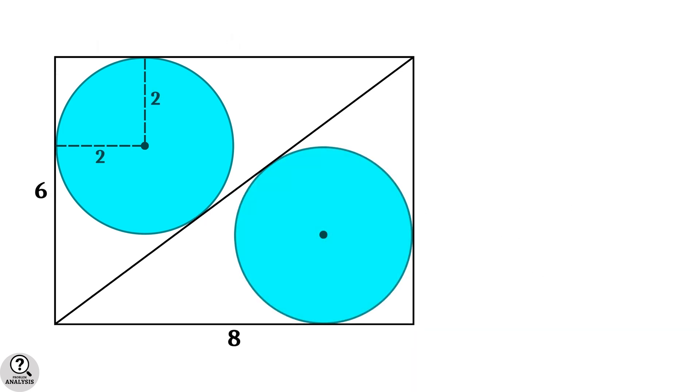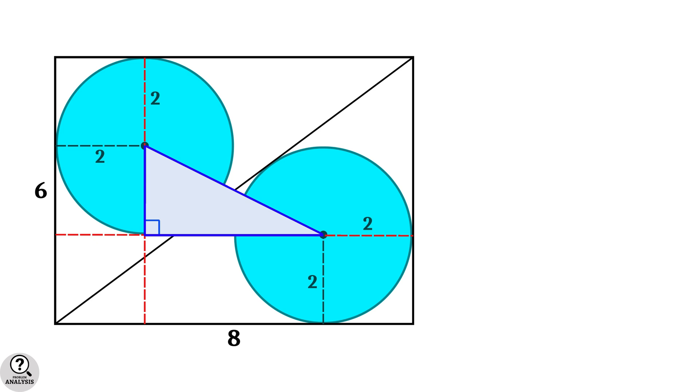Now consider the whole rectangle. Since the circles are identical, both have radius 2 units. Remember, we want to find the length of the blue line. Consider these two radii of the circles and extend them. As you can see, a right triangle forms here.